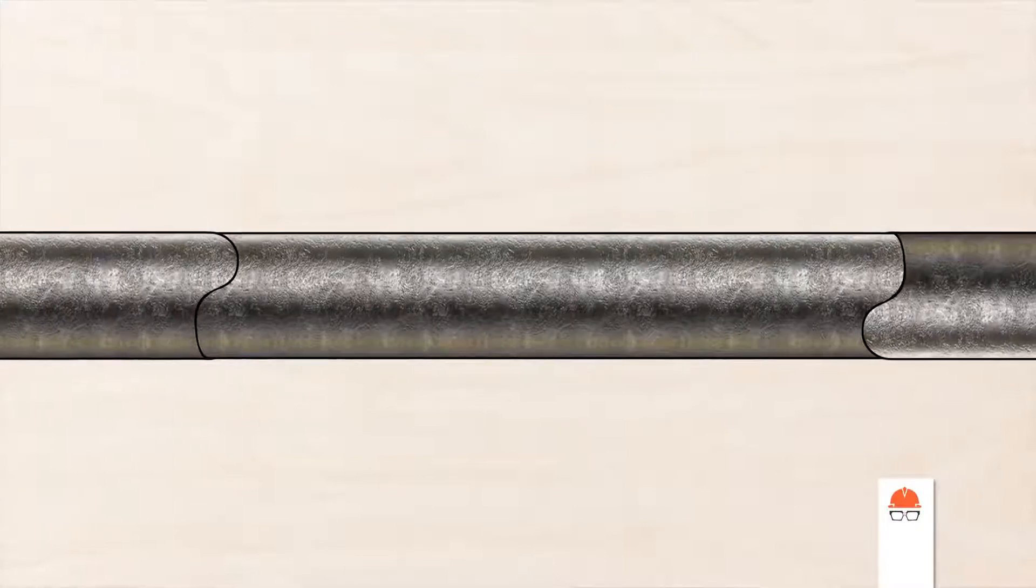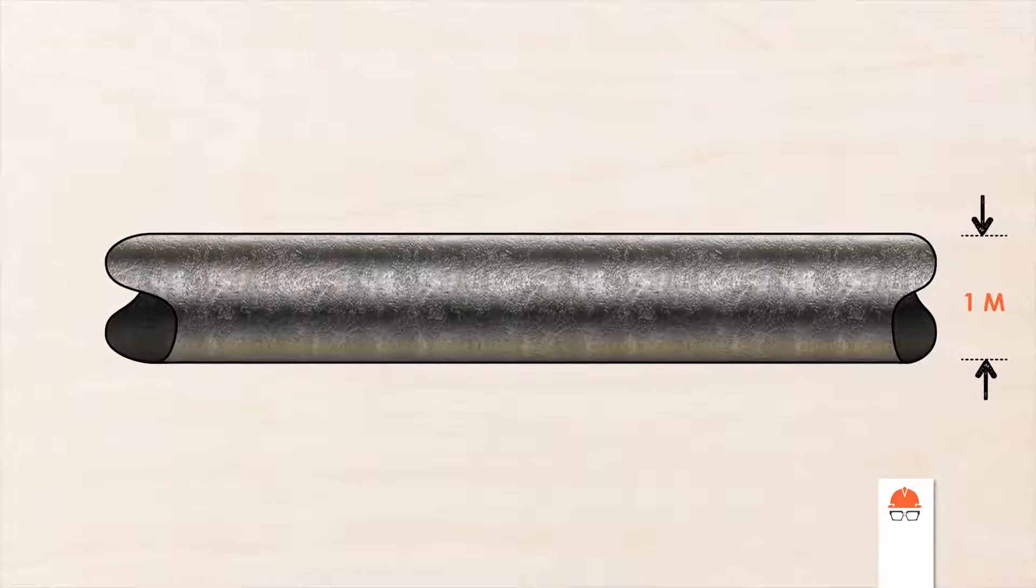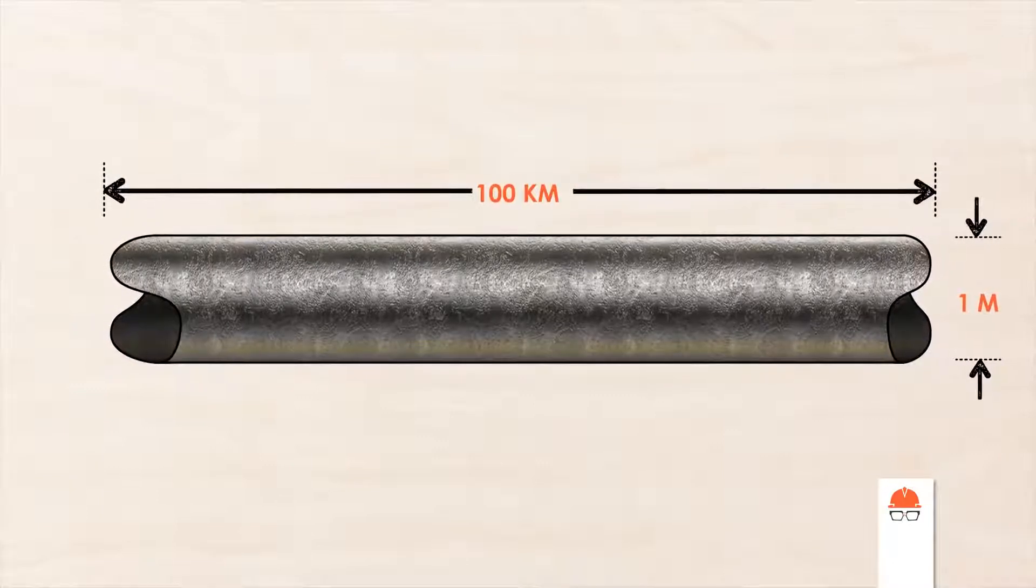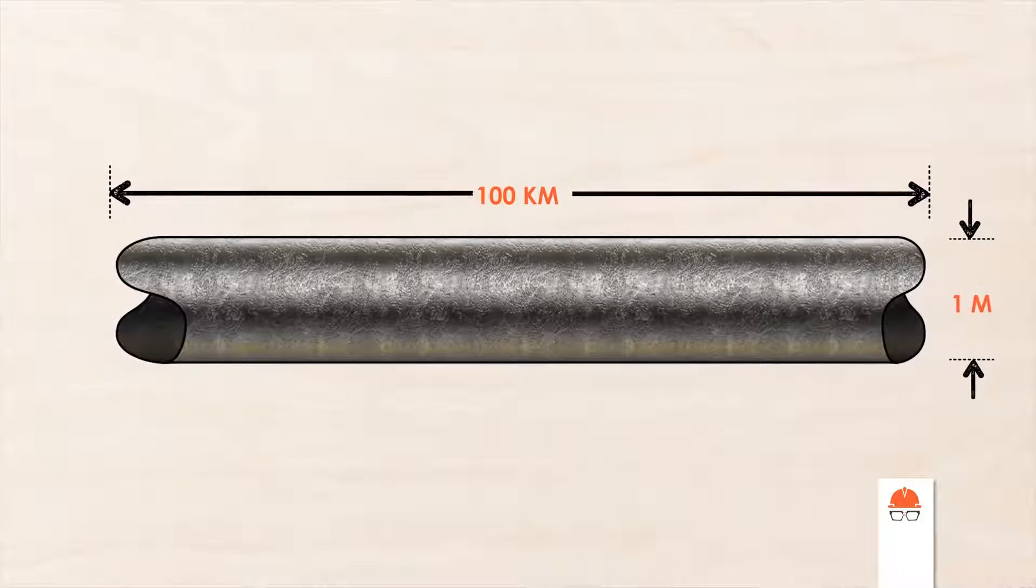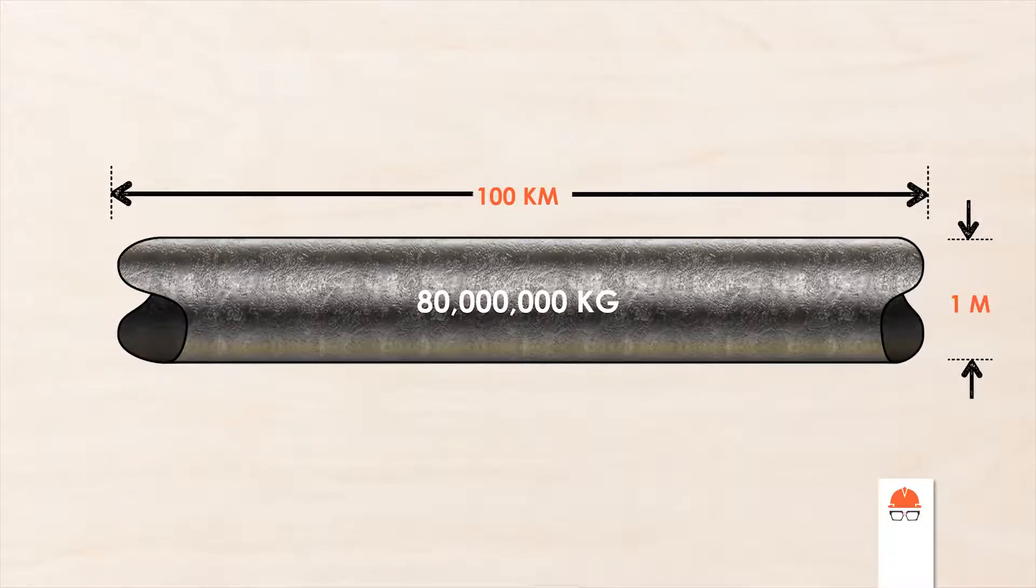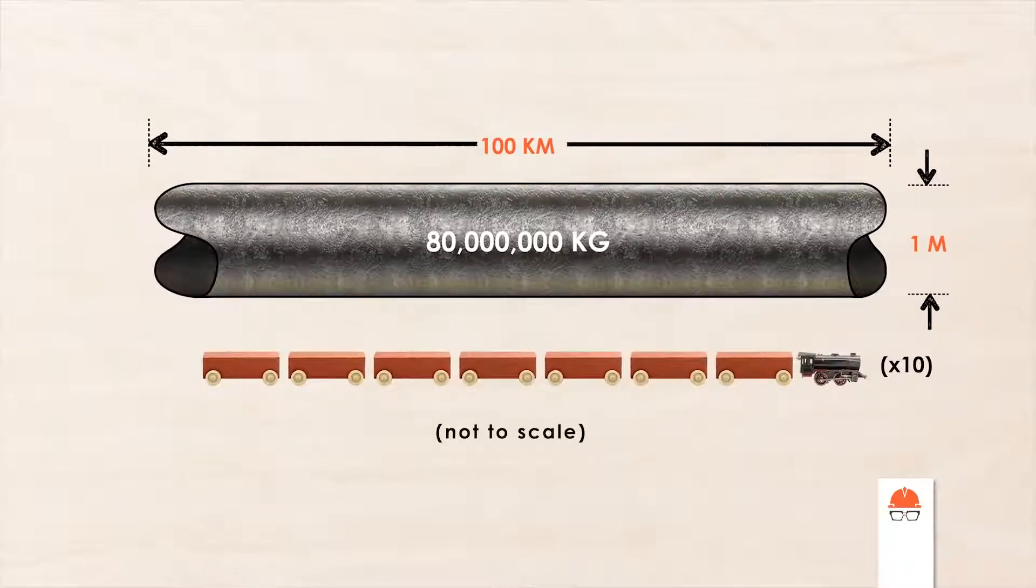Let's do a quick calculation. If you have a pipeline carrying water that is 1 meter in diameter and runs for 100 kilometers, a fairly average-sized pipeline, the mass of water in the pipe is about 80 million kilograms. That's a lot of kilograms. In fact, it's the equivalent of about 10 freight trains.